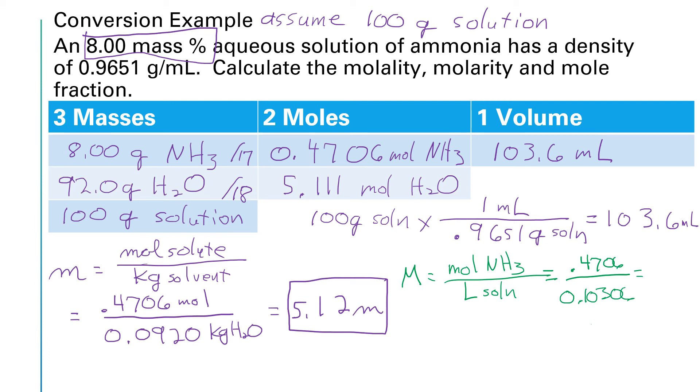Let me run that through my calculator, 0.4706 divided by 0.10306. Oh, whoops, I have an extra zero in there. Sorry, let me do a little bit more erasing. Yep. And here we go. That denominator should be 0.1036. Okay, now let's run that through the calculator, 0.4706 divided by 0.1036. That gives me a molarity of the solution of 4.54 molar.